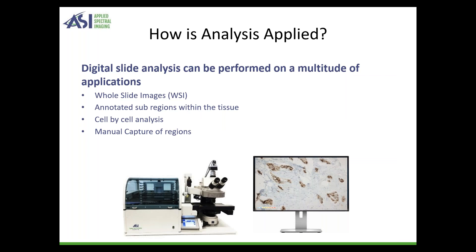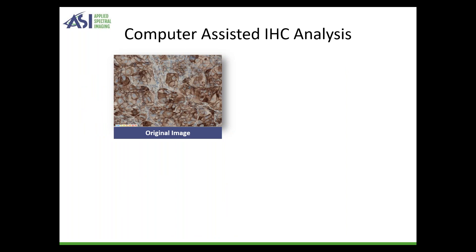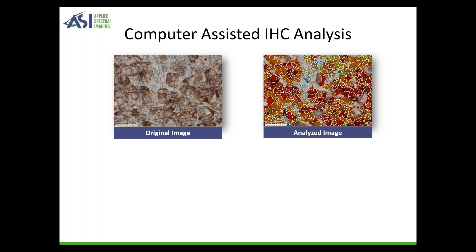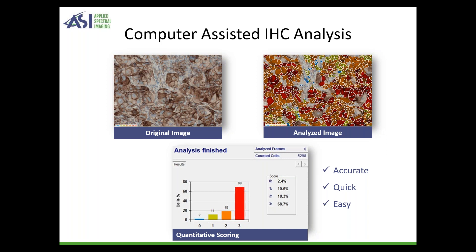So how is this analysis applied? You can apply it in a few different areas. You could do whole slide images (WSI), or annotate subregions within a tissue and specifically analyze only those areas. You could even do a cell-by-cell analysis once the image is captured, or capture a multitude of regions and apply these applications to those regions individually. We use computer-assisted IHC analysis to help us. Here we see an original image of a membrane slide, and on the right an analyzed image applying morphometric and intensity criteria to provide a reproducible data set quickly to aid in diagnosis.